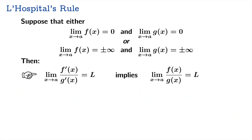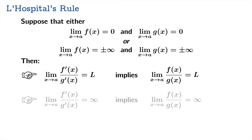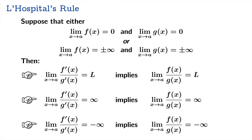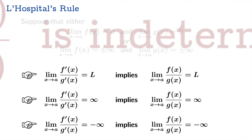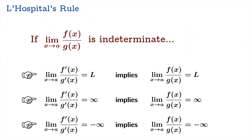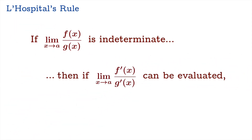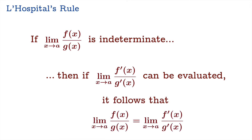This rule has a couple more statements. When the limiting value of the ratio of derivatives diverges to either positive or negative infinity, that implies the original limit must also have exactly that same behavior. To paraphrase: if you're working on an indeterminate form, and the limit of the ratio of the derivatives can be evaluated, it follows that the limit of the original ratio must match the limiting value of the ratio of the derivatives.